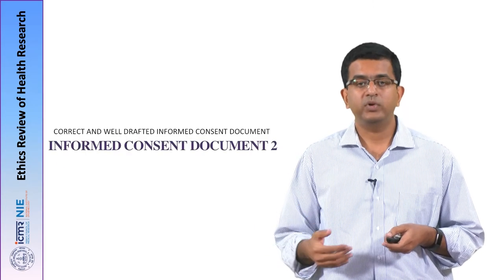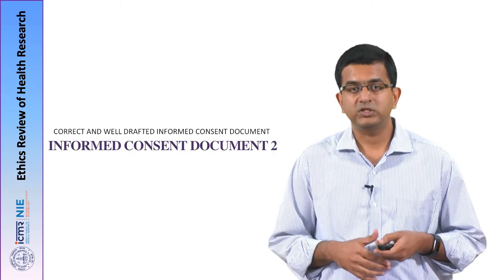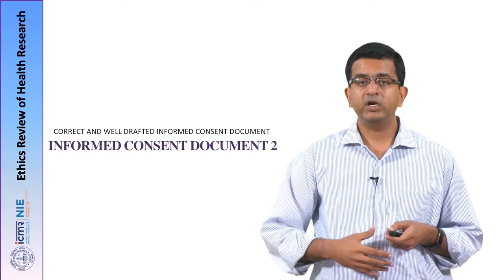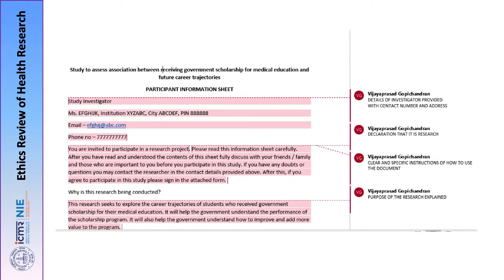Now let us go through the second case study — a correct and well-drafted informed consent document — so we can compare it head-to-head with the previous poorly drafted one. This is a study to assess the association between receiving government scholarship for medical education and future career trajectories. You can see that this entire informed consent document starts with details of the investigator — the name, address, email ID, and phone number are provided very clearly.